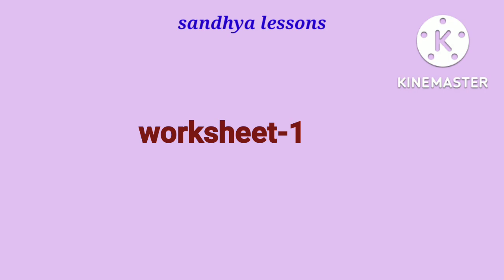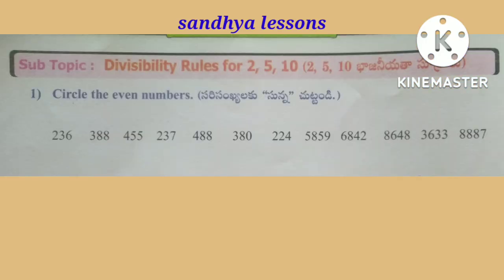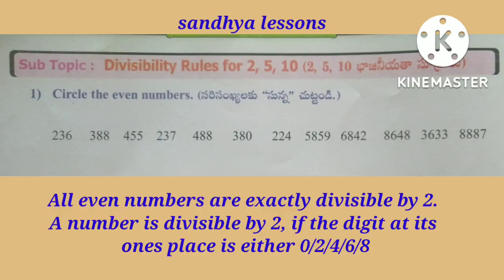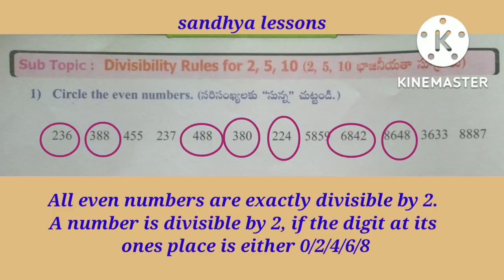Worksheet 1, First Roman: Circle the Even Numbers. All even numbers are exactly divisible by 2. A number is divisible by 2 if the digit at its ones place is either 0, 2, 4, 6, or 8.